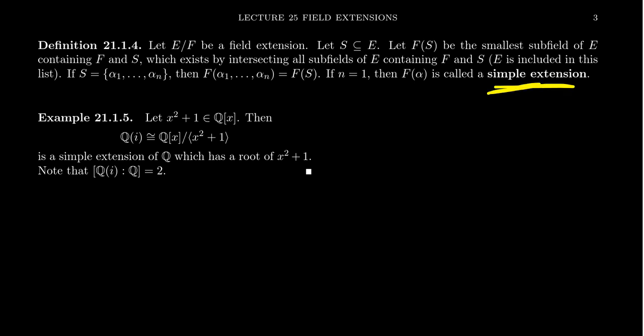With the notion of a simple extension, Kronecker's theorem can be rebranded as: every irreducible polynomial over a field has a root in a field extension, and that field extension is necessarily a simple extension. Kronecker's theorem does this constructively — we don't need to know what the larger field is; we can build it from scratch using the quotient ring.